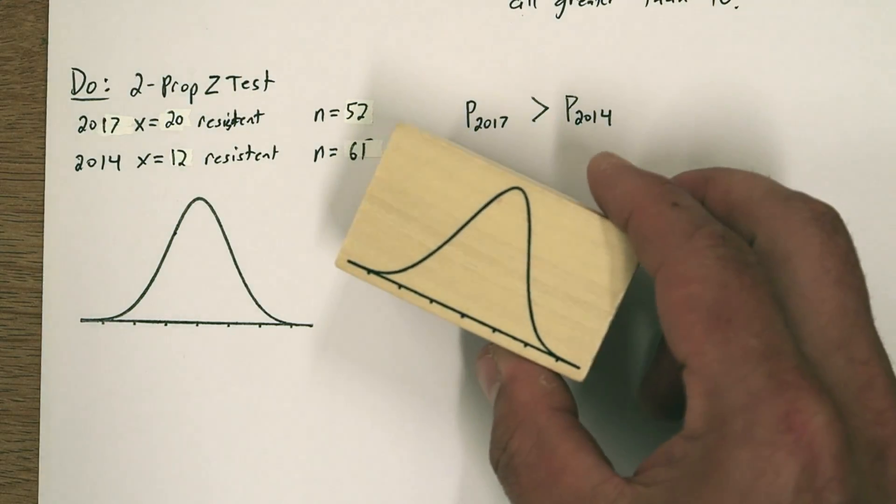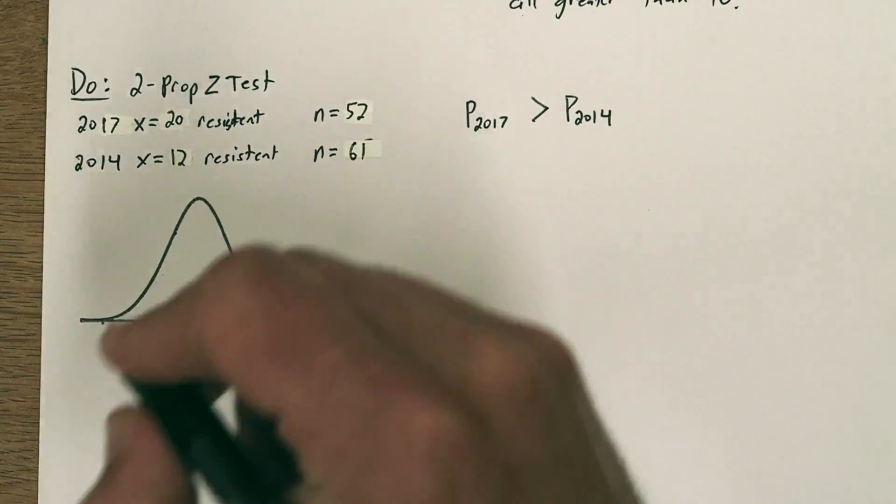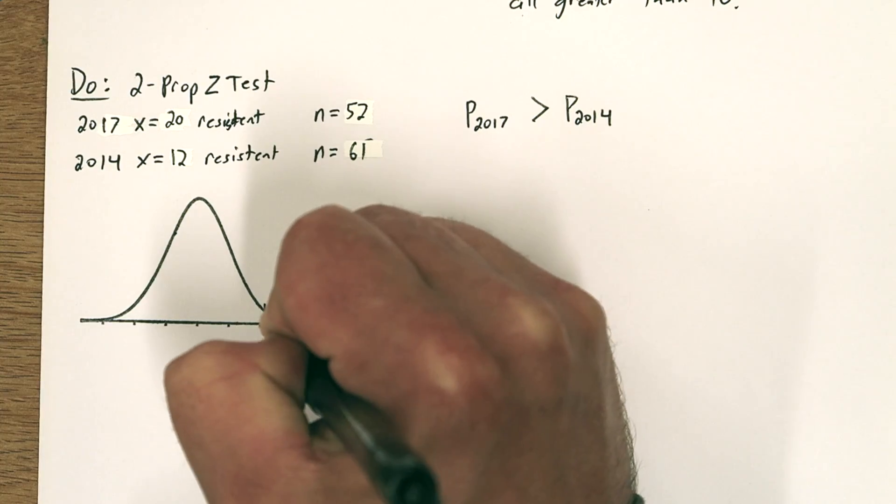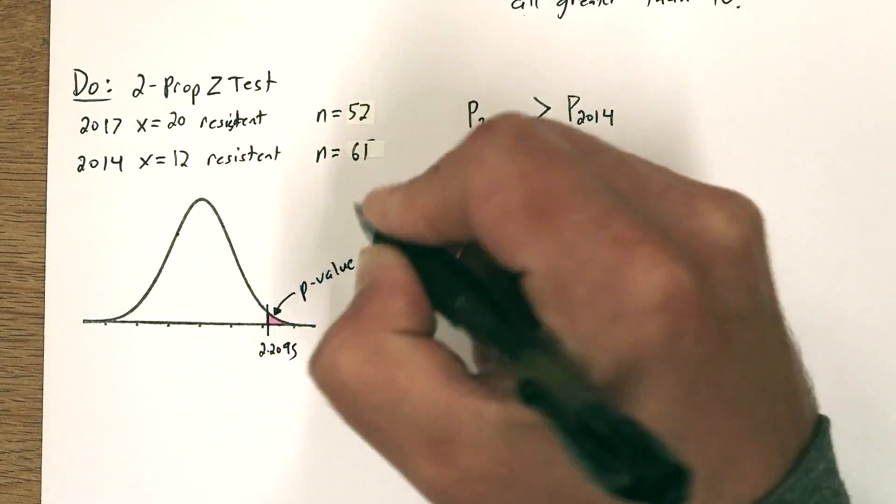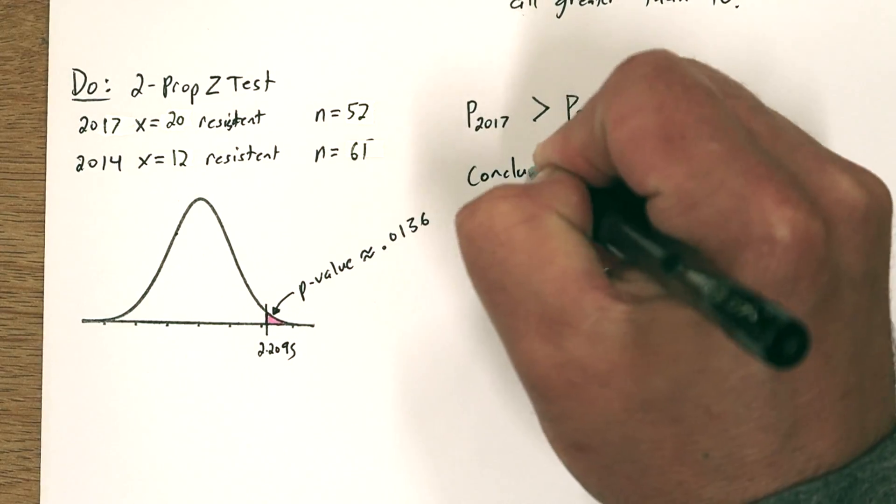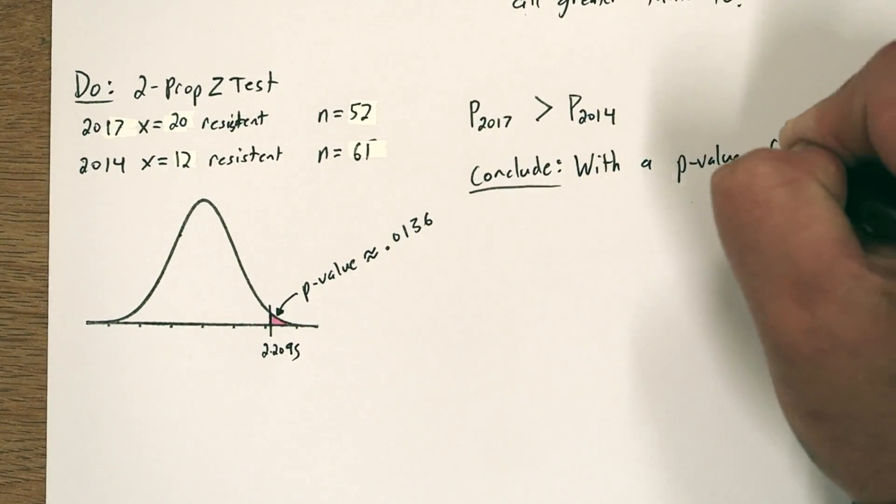Now I have this cool normal distribution stamp. You can get this on Amazon—it's a great gift for your AP stats teacher. So I copied it down. In this pink area here is the p-value of 0.0136.